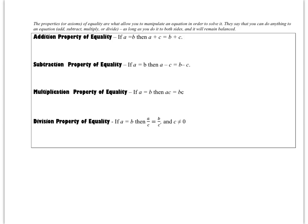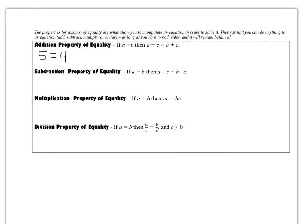Every step I just did used a property of equality. The reason I'm allowed to add, subtract, multiply, or divide both sides of an equation is because of these properties. The addition property of equality says: if a = b, then a + c = b + c. For example, take the simple equation 5 = 4 + 1. If I add 2 to both sides, I still have a true statement — both sides equal 7. So these properties say it doesn't matter whether you add, subtract, multiply, or divide both sides by the same number — the equation will still be true.